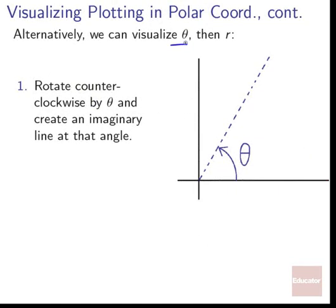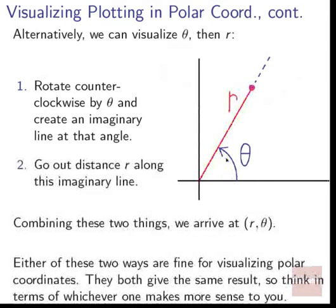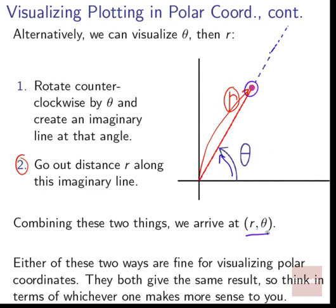Alternatively, we can visualize theta, then r. First, we rotate counterclockwise by theta and create an imaginary line at that angle — we spin from the positive x-axis up to some angle theta. Next, we go out a distance r along that direction and achieve the point r, theta. Either of these two ways are fine for visualizing polar coordinates.